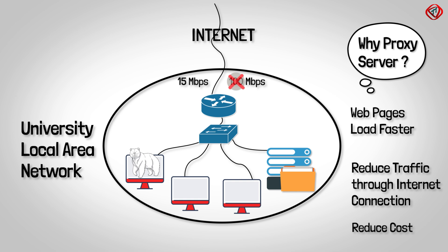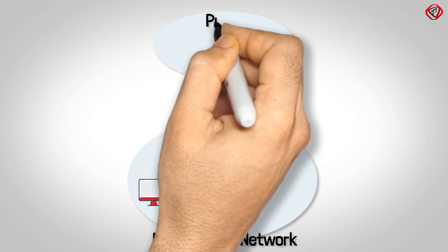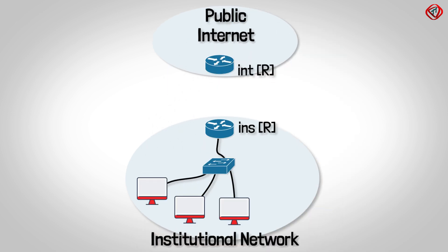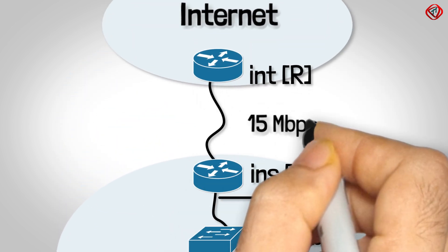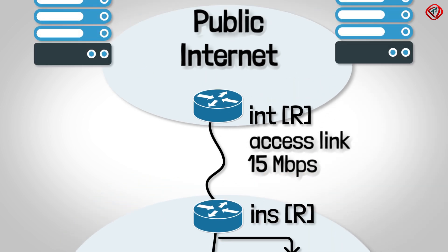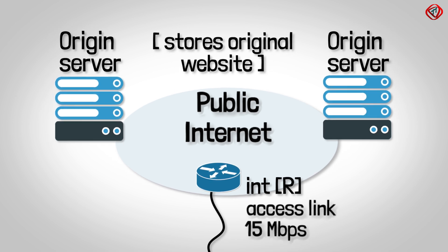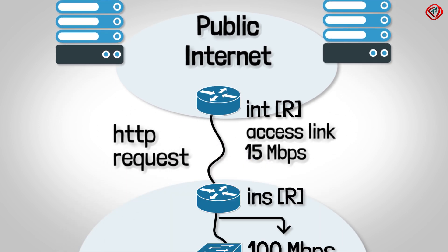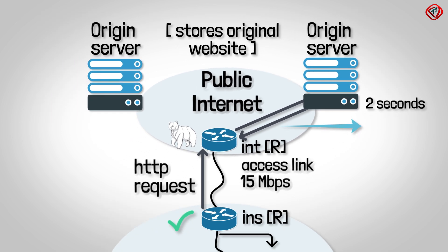To understand how proxy servers can be beneficial, let's look at an example involving two networks: an institutional network and the public internet. The institutional network is a fast 100 Mbps local area network connected to the internet by a 15 Mbps access link. The origin servers, which store the original websites, are spread across the globe. HTTP request messages from the institutional router to the internet router are negligibly small, creating no traffic on the access link. The internet router forwards requests to the origin server and receives requested objects in about two seconds, which we refer to as internet delay.